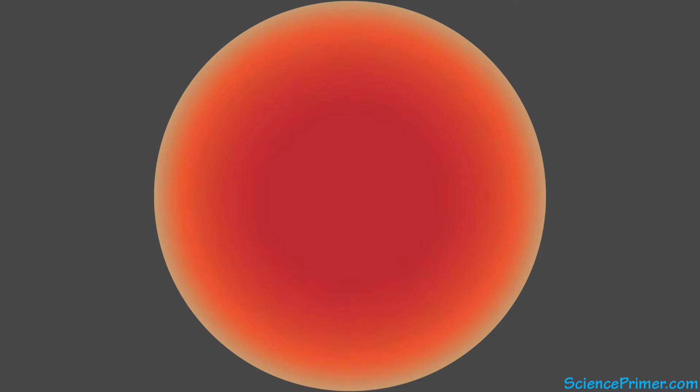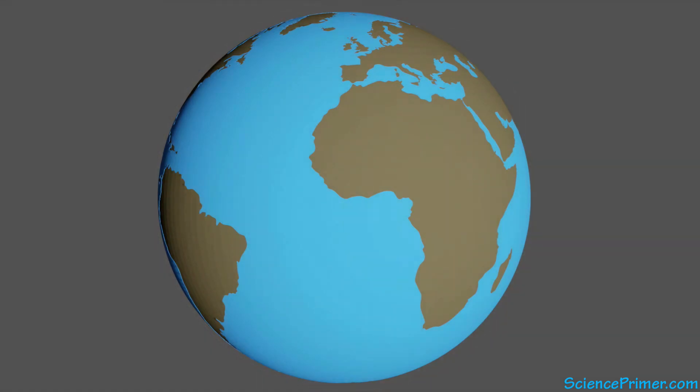Over time, distinct layers formed containing different combinations of elements. These layers vary in density, consistency, and other physical characteristics. The outer layer on which we live is a very thin, rigid coating covering the planet. It is called the crust.